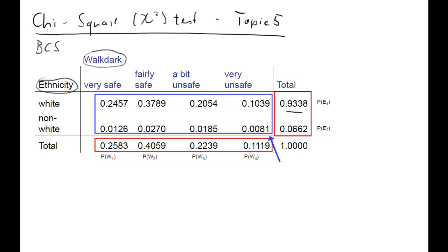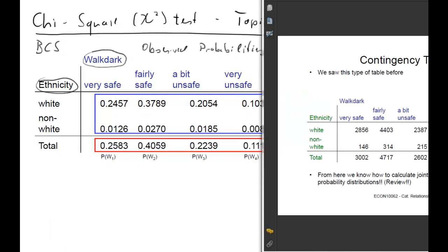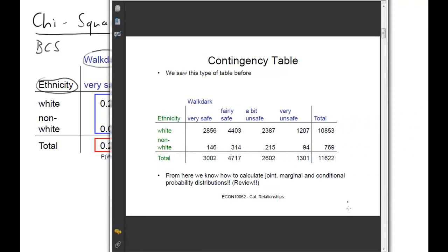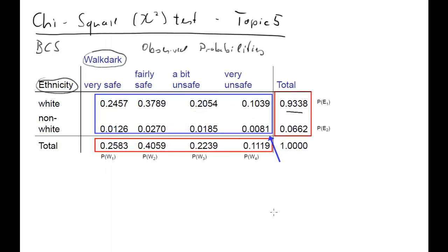So we saw these tables. These are the observed probabilities. They come from our contingency table replicated on slide 3 of our lecture, where we have all the observed frequencies. The red ones are the marginal probabilities. We have two sets of marginal probability distributions. One for the walk-dark variable - about 26% feel very safe when walking in the dark, about 11% feel very unsafe. There are four different outcomes: W1, W2, W3 and W4, with corresponding probabilities.